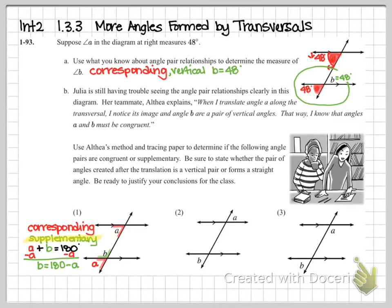For problem three, I moved A down again using corresponding angles (color-coded), then noticed that A and B are actually vertical to each other. Vertical angles are congruent, so I used red coding and concluded that A equals B.